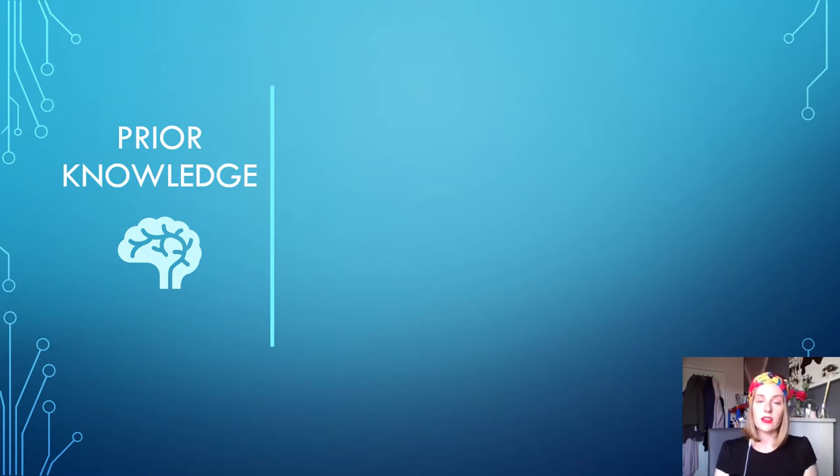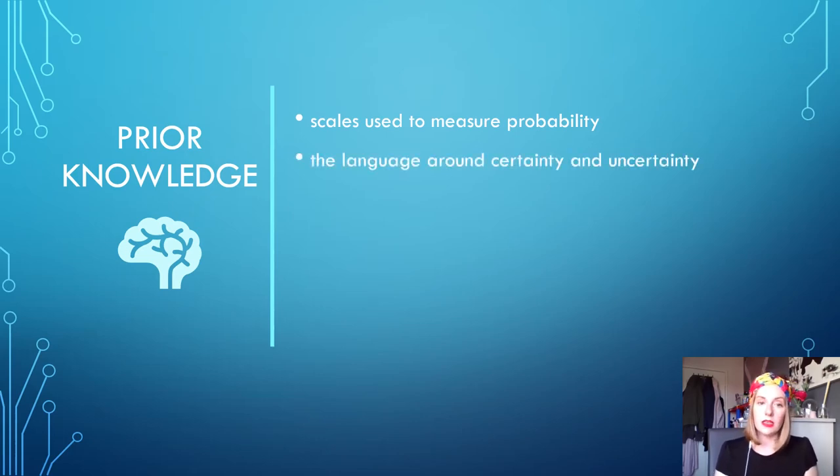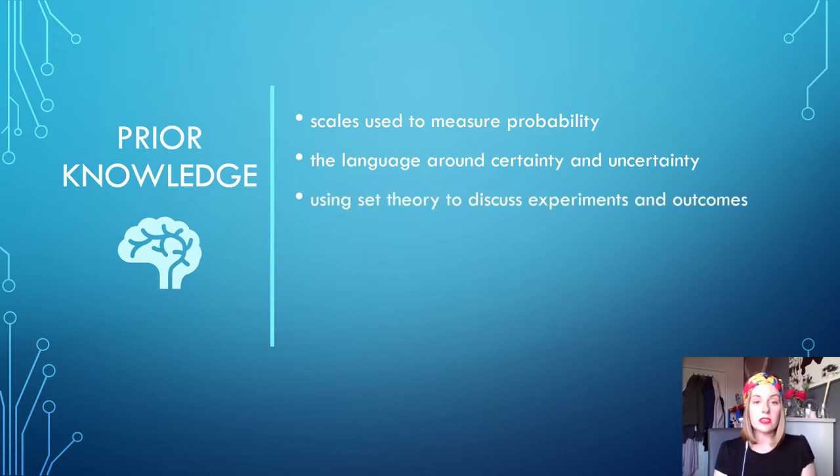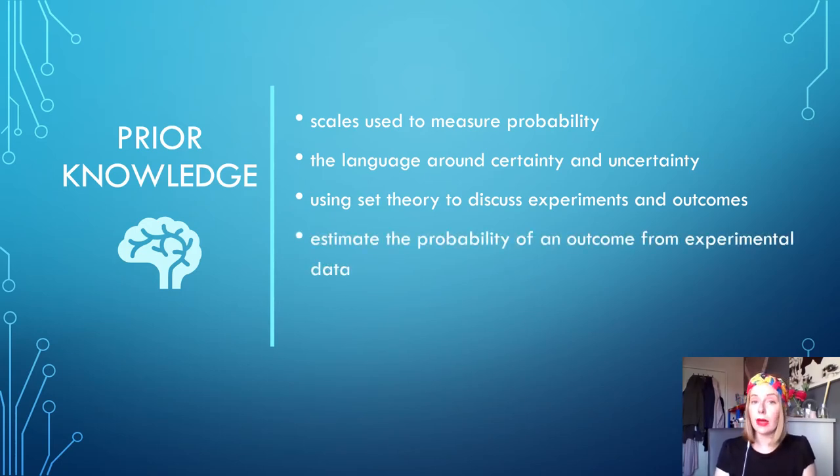Some prior knowledge that the students would have gained from their studies in their junior certificate are the scales used to measure probability, the language around certainty and uncertainty, using set theory to discuss experiments and outcomes, but this will depend on what level they studied at for their junior certificate, estimate the probability of an outcome from experimental data, and associate the probability of an event with relative frequency.